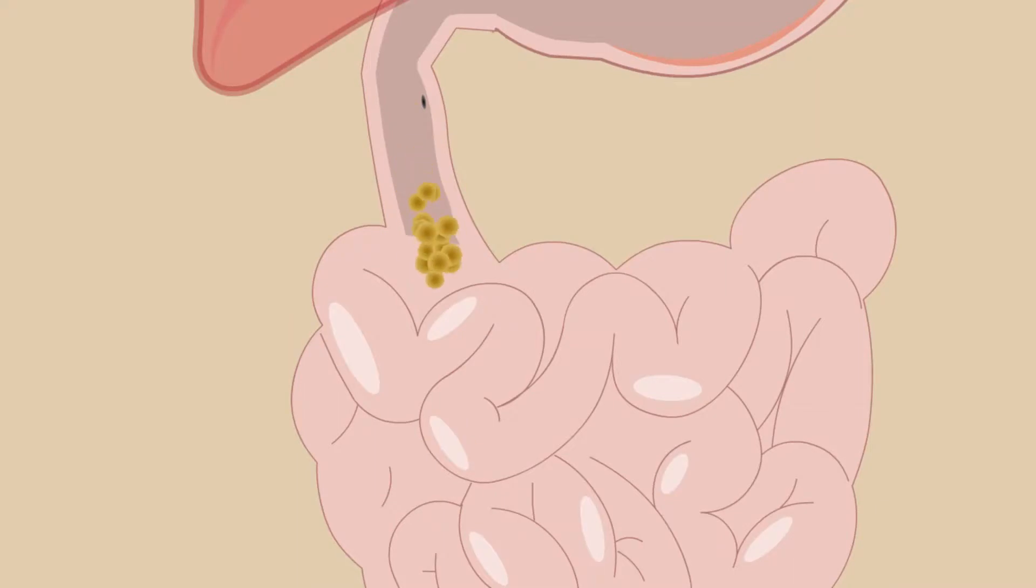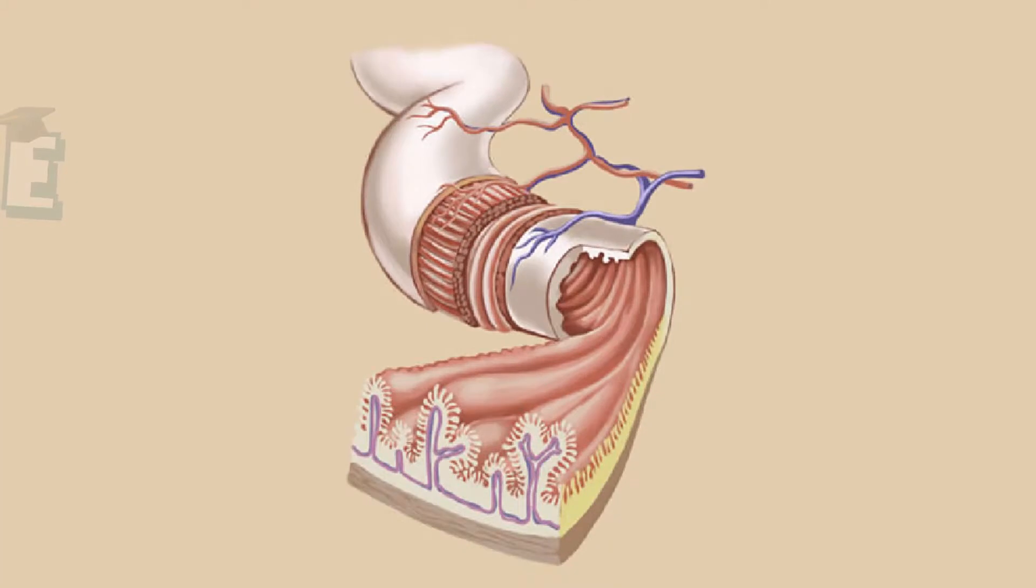The final food digestion occurs in the duodenum. This digested product will be absorbed in the small intestine, mostly by the jejunum.